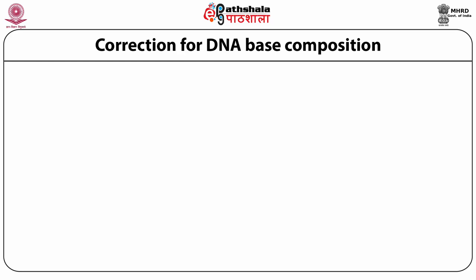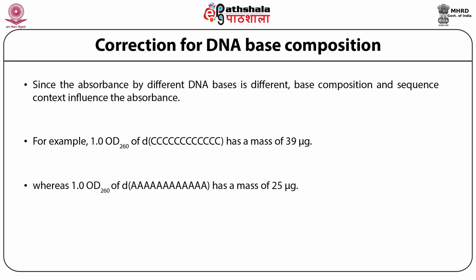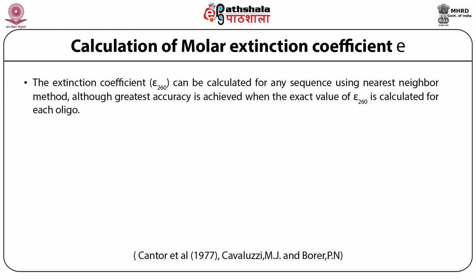We have to do a correction for DNA base composition. Since the absorbance by different DNA bases is different, base composition and sequence context influence the absorbance. For example, 1.0 OD at 260 nanometers for the sequence dCCC has a mass of 39 micrograms, whereas 1.0 OD at 260 for the sequence dAAA has a mass of 25 micrograms. The molecular extinction coefficient epsilon at 260 can be calculated for any sequence using two approaches: the nearest neighbor method, or using the exact value of epsilon 260 for each oligonucleotide.